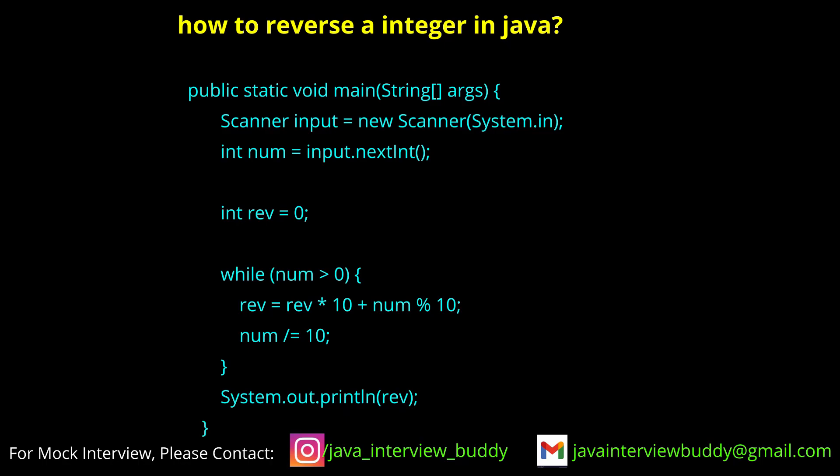Set reverse = 0. Then: reverse = reverse * 10 + remainder, so 0 * 10 + 3 = 3. Then integer = integer / 10, so 123 becomes 12. Put these three lines in a while loop. In the next iteration, 12 mod 10 = 2, reverse = 3 * 10 + 2 = 32. The loop continues until the full reversed number is built.